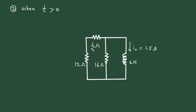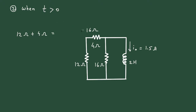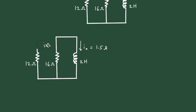Now as we can see, this 12 ohm and 4 ohm are connected in series, so their combined resistance is 12 plus 4 equals 16 ohm. This 16 ohm and the other 16 ohm are connected in parallel. When two resistances of the same value are connected in parallel, they can be replaced by a single resistance of half the value — so this becomes 8 ohm.